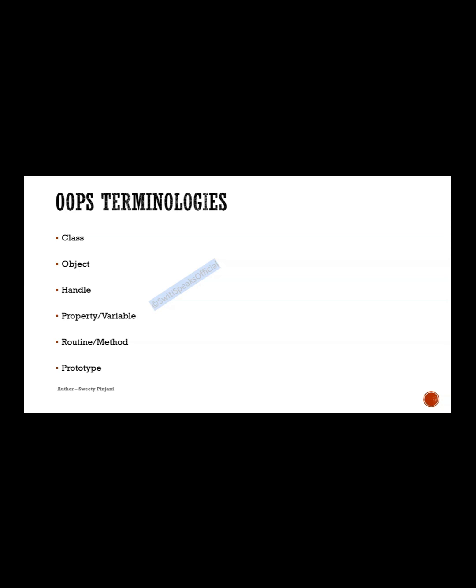Now let us understand these OOPs terminologies with some real-life examples, because with analogy it is very easy to understand OOPs concepts. Consider that I have a class called car. I am creating an object of this car which is 'my car.' Then I have created a handle of this car which is C1. Handle is like an address — the location of the car. When you know the location, you can locate the object 'my car.'